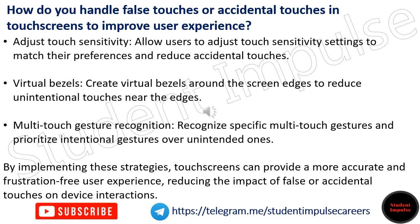Allow users to adjust touch sensitivity settings to match their preferences and reduce accidental touches. Create virtual bezels around the screen edges to reduce unintentional touches near the edges. Recognize specific multi-touch gestures and prioritize intentional gestures over unintended ones. By implementing these strategies, touchscreens can provide a more accurate and frustration-free user experience, reducing the impact of false or accidental touches on device interactions.